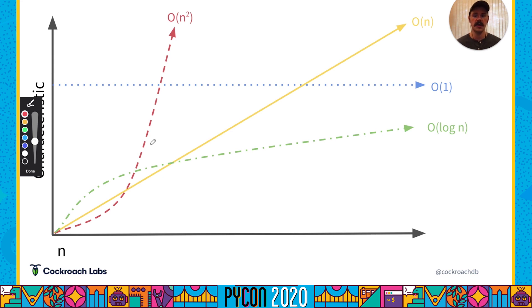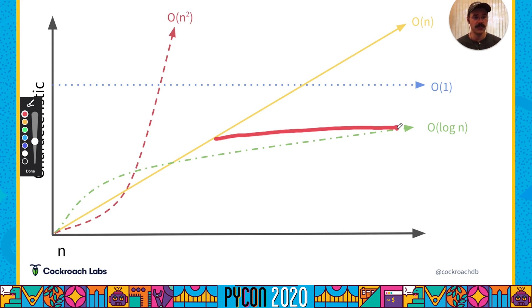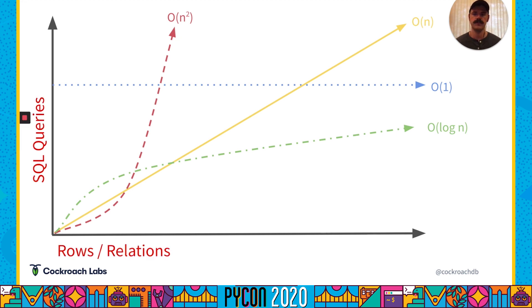However, if you're in a situation where the upper bound of n is unknown, this is when O(n²) can be scary, as you aren't sure how high you'll end up growing. Finally, we have O(log n), which indicates that as n approaches infinity, our characteristic is going to approach some upper bound. You'll often see this in functions that take their input and divide it in half over and over again until they find a given result — specifically, binary search has this runtime complexity. For the purposes of this talk, the characteristic we're going to be tracking is the number of SQL queries performed, and our n value is going to be the size of our database — the number of rows and relations in it.